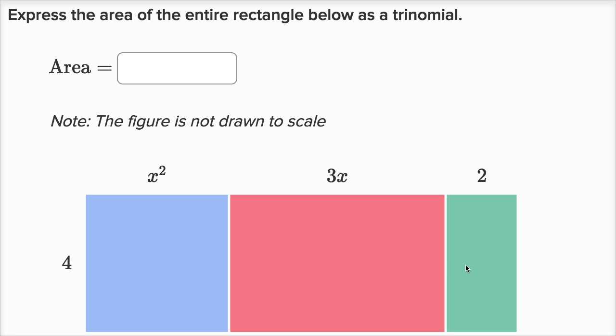And we see for all of these rectangles, the height here is four units, and then the widths are expressed in terms—or at least the first two are expressed in terms of x, and then this last one has a width of two. So what's the area of the entire rectangle? I encourage you to pause the video and think about it.